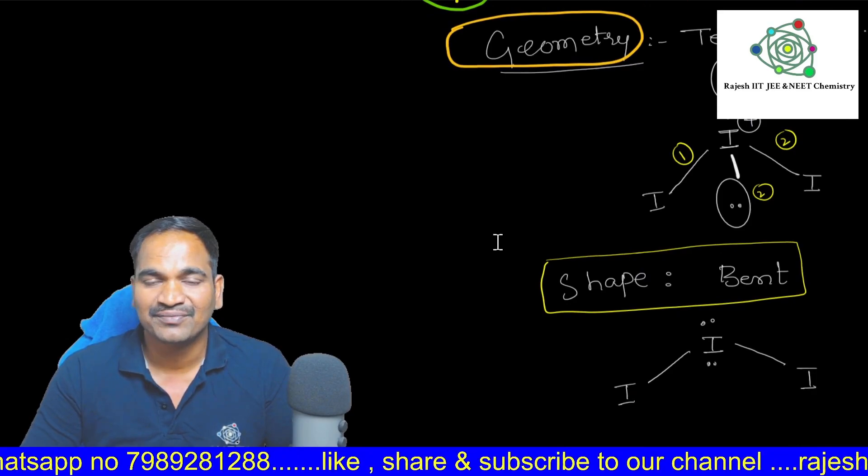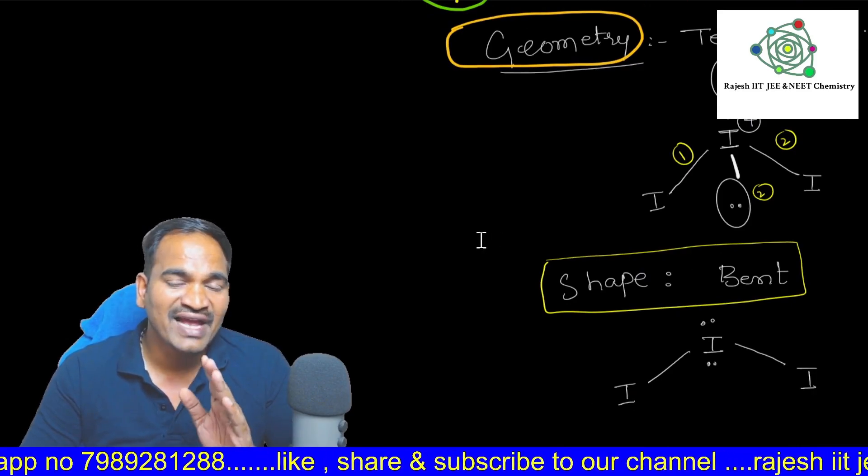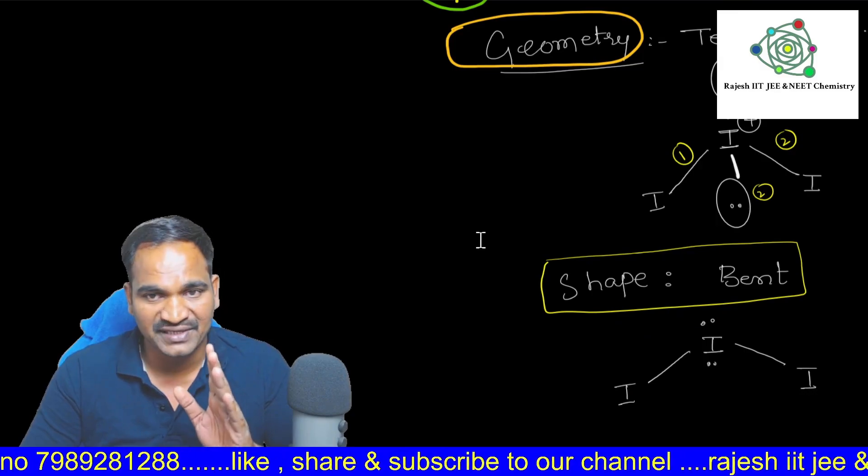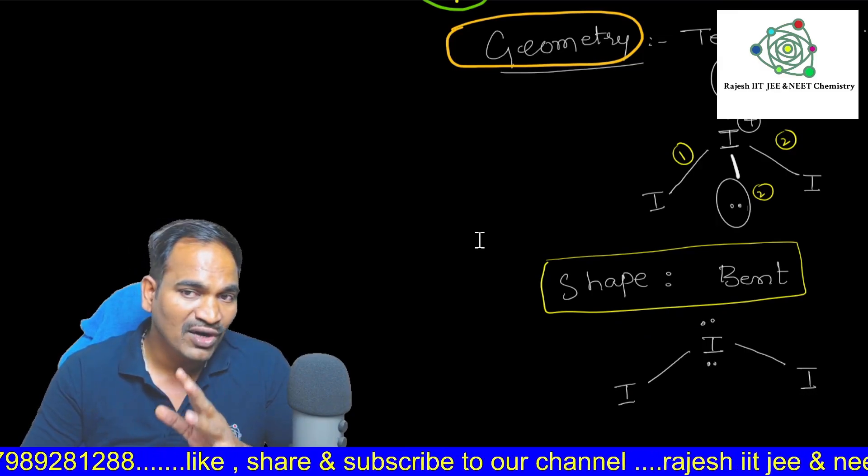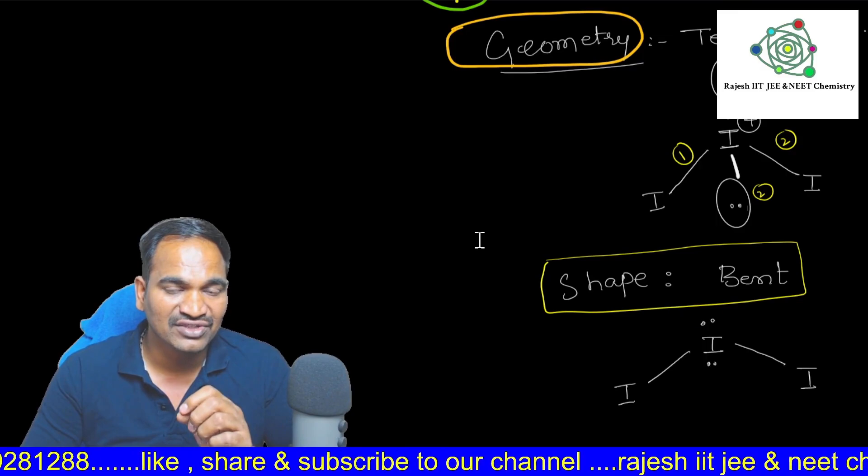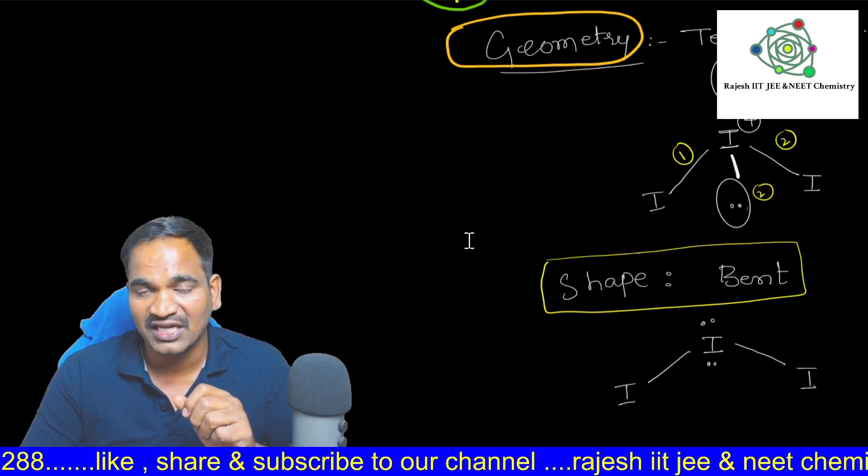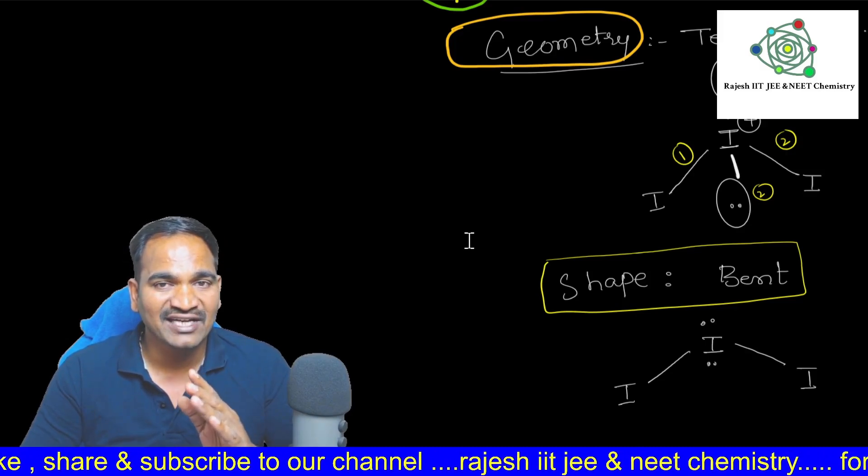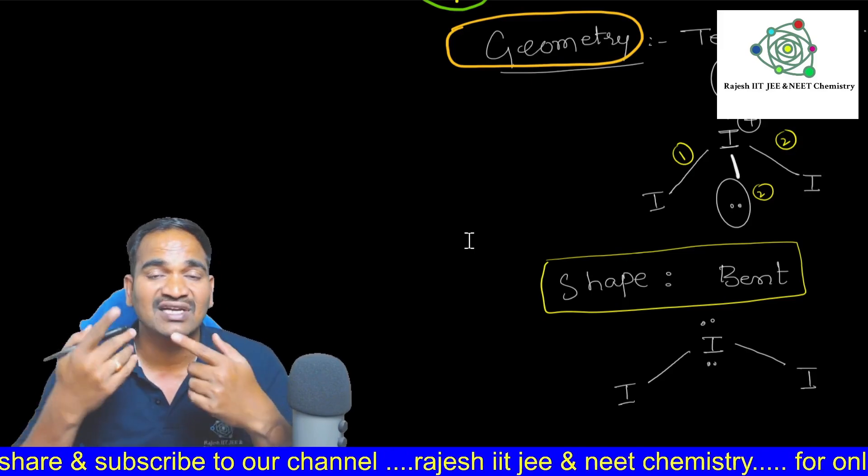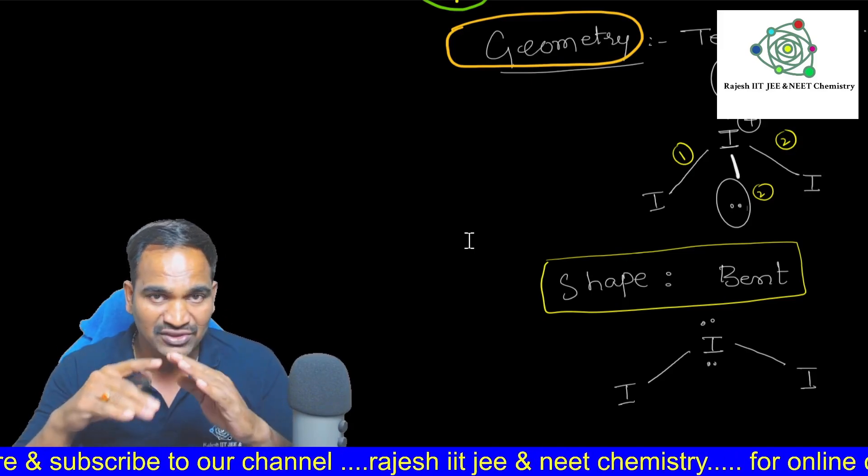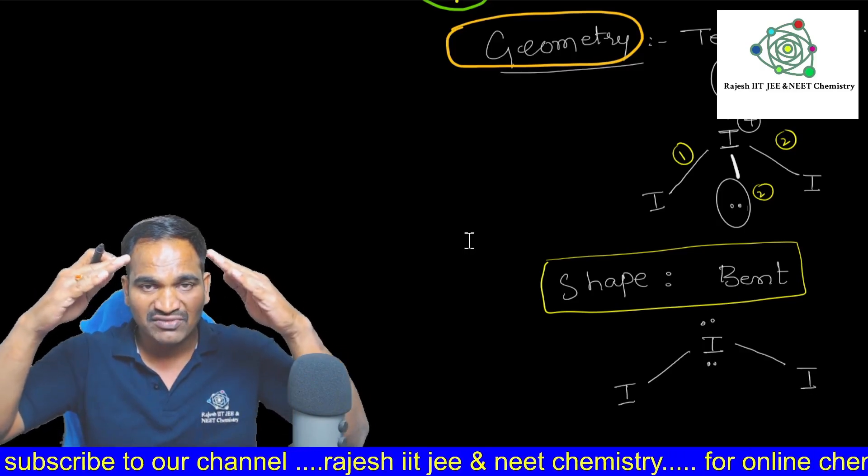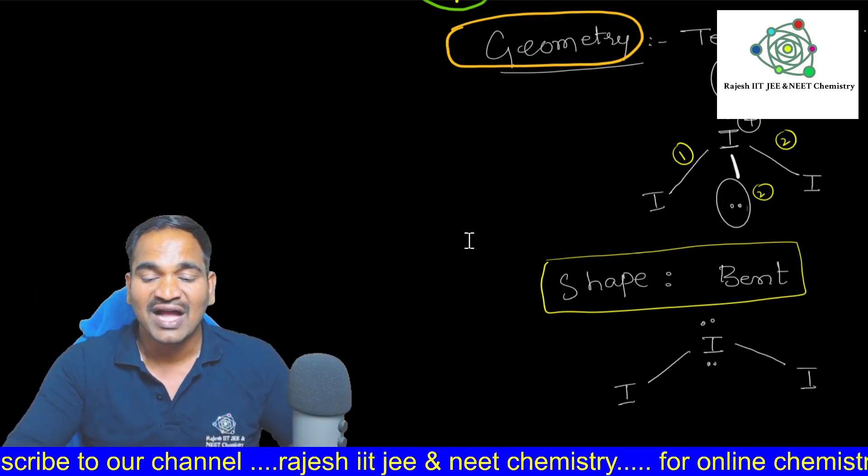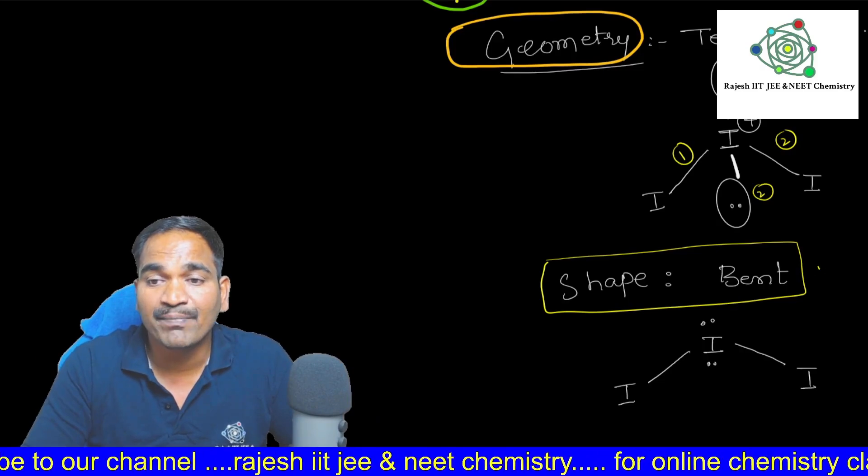Now coming to this shape. In the shape, we have to consider only bond pairs. How those bond pairs are arranged around the central atom, we need to think about it. If you take here, shape of the I3 plus, it is a bent shape because central atom is having 2 lone pairs. Due to the repulsion, this bond pairs will bend like this. So I3 plus shape is bent shape.